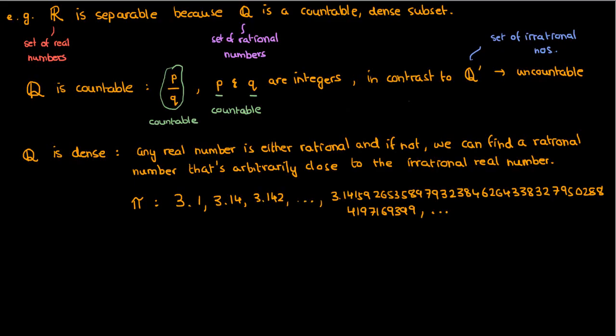Now, because the set of rational numbers is a subset of the set of real numbers, and because it's countable and dense, we say that the set of real numbers is separable. Because the set of real numbers is separable, we can consider the set of real numbers to be a Hilbert space, because in addition to being separable, it's also a vector space, and it also has that inner product operation that you probably know as the dot product.